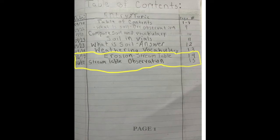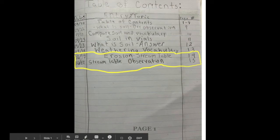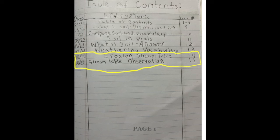So your very first page is your table of contents. On your table of contents, we have a column for the date, a column for the entry or the topic that we are writing about, and then on what page number it is.